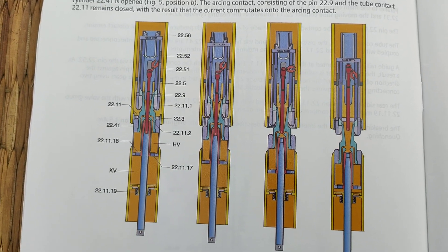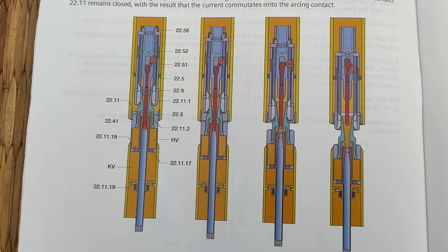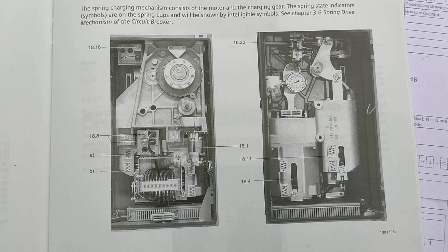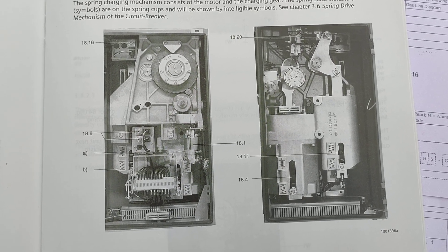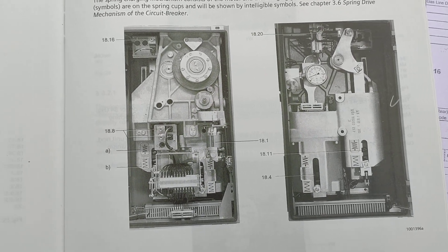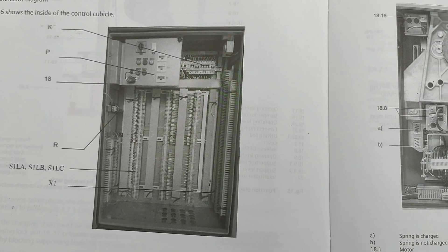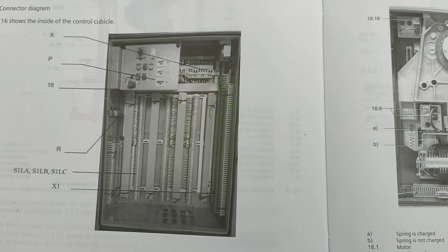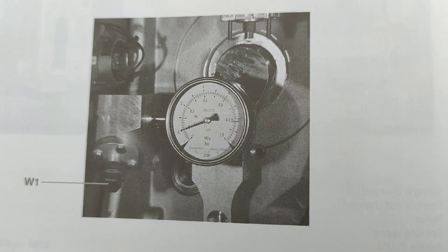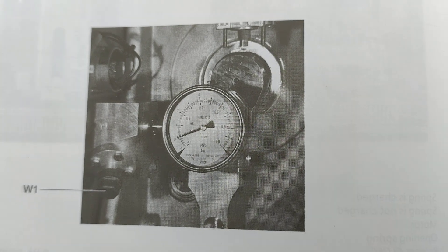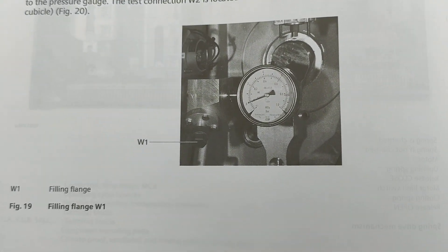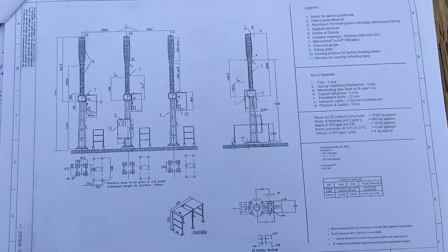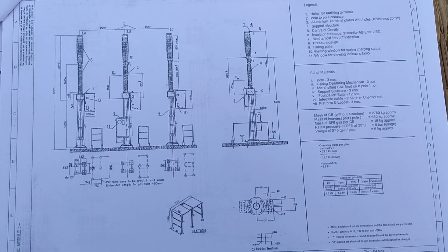This is the internal pictures inside the interrupter of the poles. This is the drive mechanism pictures in front, and this is the backward pictures for the control circuit wiring. This is the density monitor W1 given at the point of the filling flange. This is the total GA drawing of the 220 kV circuit breaker.